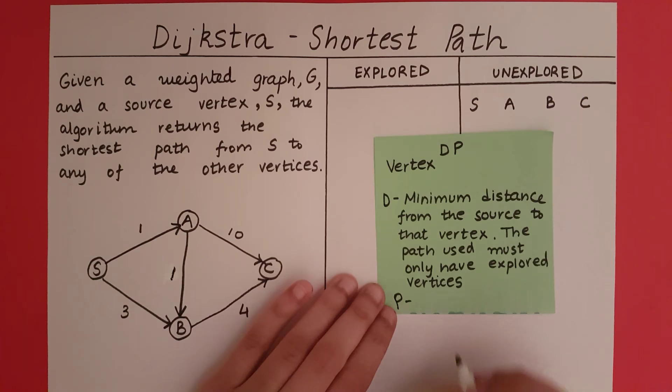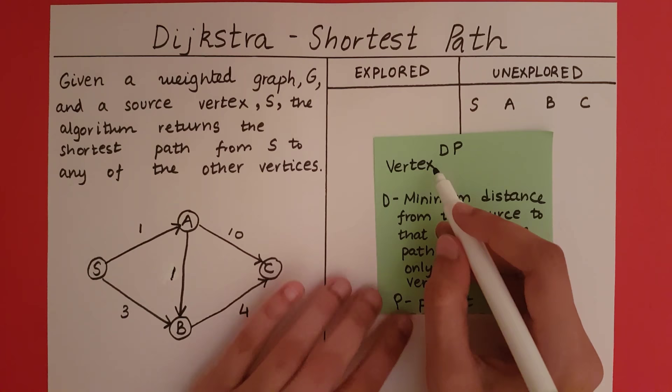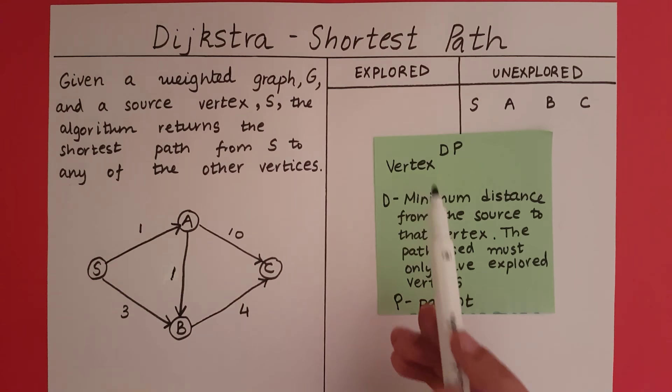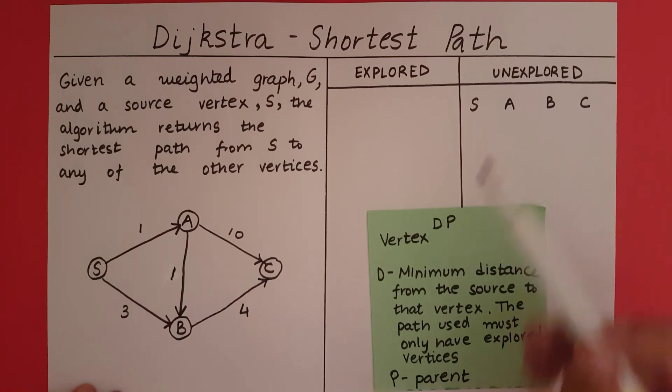Now let's look at P. P is going to be the parent of that vertex in the path used to get the minimum distance. We take a path from the source to that vertex — that path should only include explored vertices — and the parent of the concerned vertex within that path is P. With that in mind, let's start our algorithm.